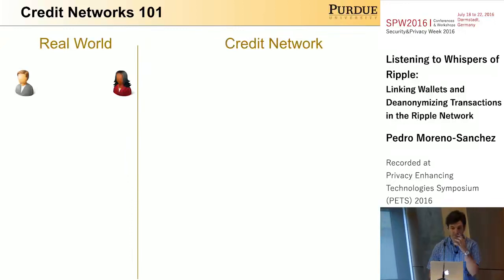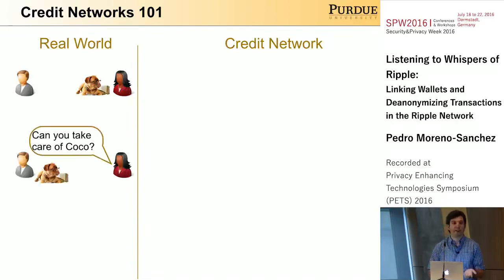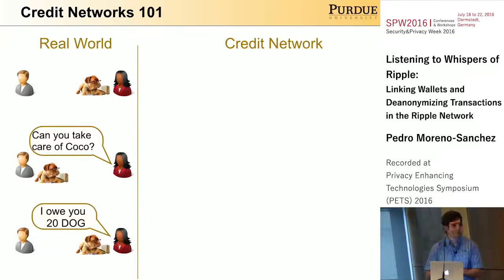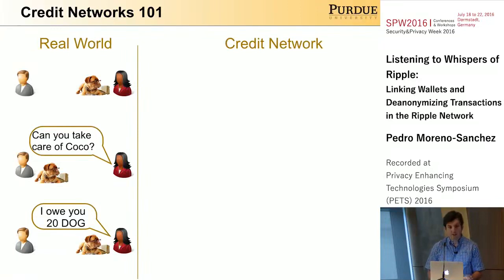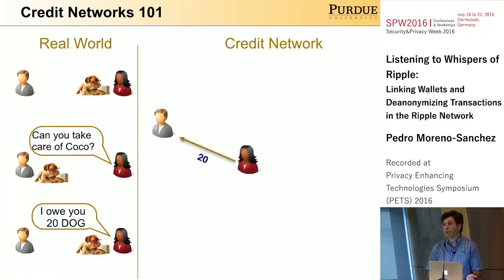Let's see through an example. Imagine that we have two friends, Alice and Bob, and Alice has a dog that we are going to call Coco. Alice has to go out of town and asks Bob to take care of Coco. After she returns, she wants to pay for the service to Bob, and she decides to pay in DOG currency. This situation can be represented in the credit network using a directed edge from Alice to Bob with a weight of 20.